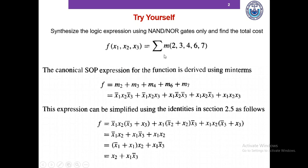We have the sum of min-term indices 2, 3, 4, 6, and 7, which means the 2nd, 3rd, 4th, 6th, and 7th rows of the truth table give output 1, and the other rows are 0.